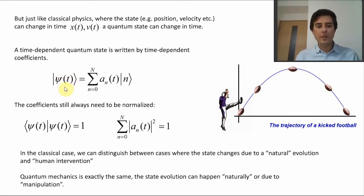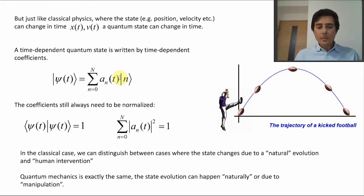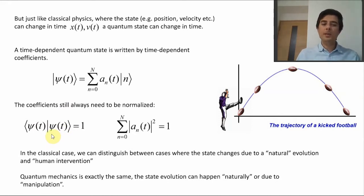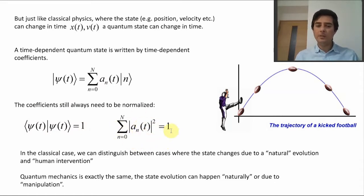The state is always normalized — that's one of the rules of quantum mechanics — so the inner product of the state with itself is equal to one, and the mod squared of these coefficients sums to one. How could this actually change with time? Well, you can arbitrarily divide it into two categories, just like with the guy kicking the ball.